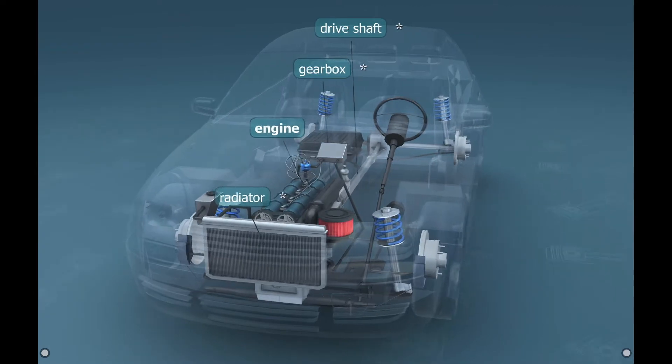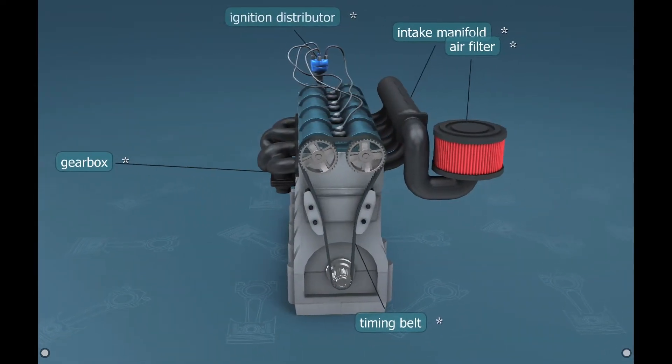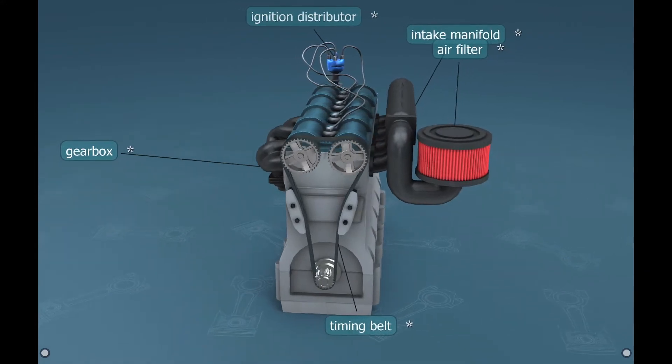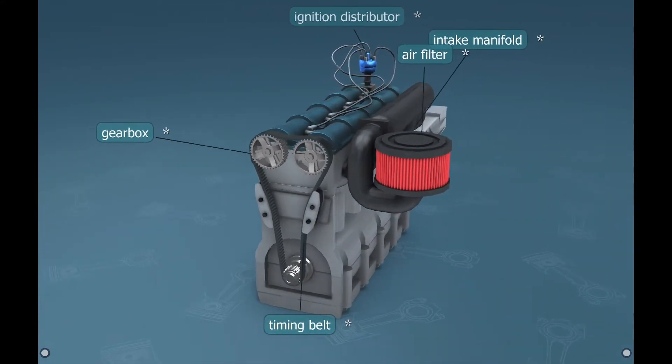As in Wikipedia, an octane rating or octane number is a standard measure of fuel's ability to withstand compression in an internal combustion engine without detonating.